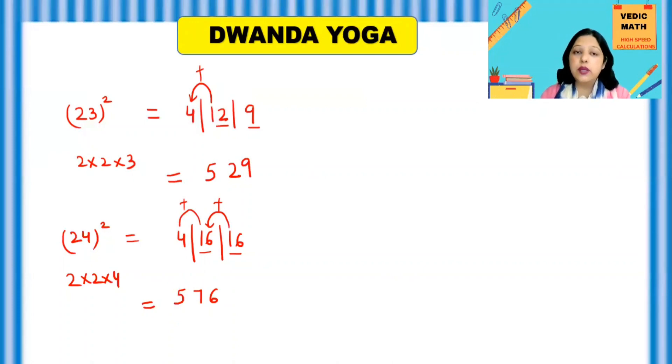576 is the square of 24. Now you can see with one line only, you have got the answer. And with practice, you can do these squares in your mind only.